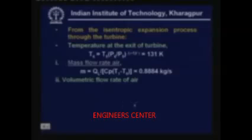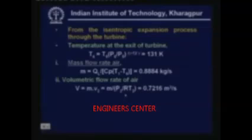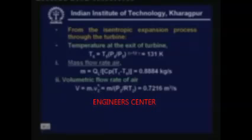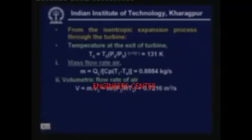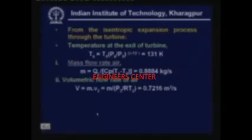Next, we compute the volumetric flow rate at the compressor inlet. It is simply equal to the mass flow rate times the specific volume of air at that point. Since air is assumed to be a perfect gas, specific volume equals RT/P. Therefore, volumetric flow rate V = M_dot × R × T2 / P2, where P2 is 100 kPa and T2 is 283 K. Substituting these values, the volumetric flow rate is 0.7216 m³/s.